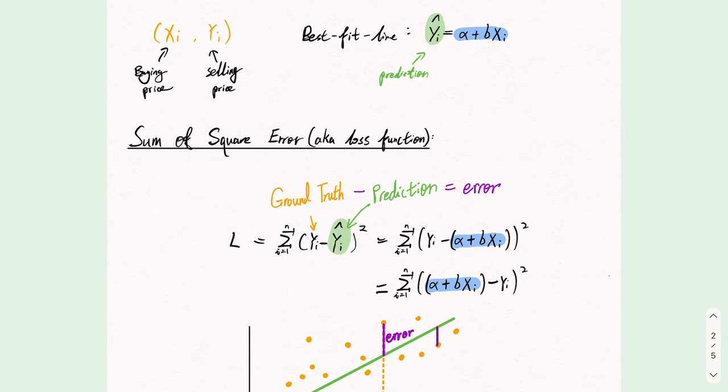Each data point on the graph can be represented by x i and y i, where x is the buying price and y is the selling price. Also we know a linear graph is y equal to a plus bx.